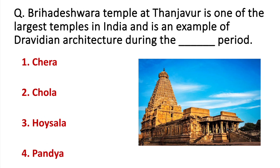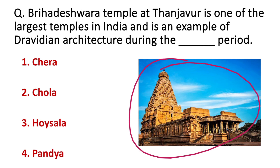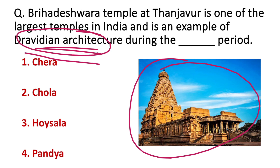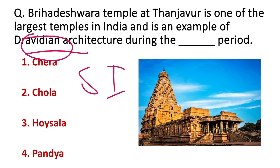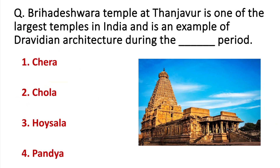Brihadeshwara Temple at Thanjavur is one of the largest temples in India and is an example of Dravidian architecture, built during the Chola period. This temple is located in South India. Dravidian style is associated with South India, while Nagara style is associated with North India. It was created by the Chola dynasty — that is the correct answer. The style of architecture and its location in Thanjavur, Tamil Nadu, are also important points.